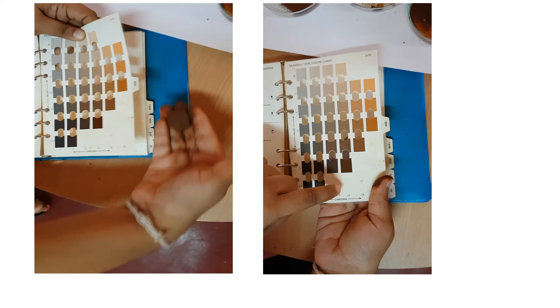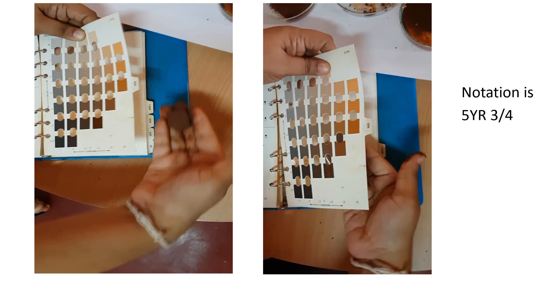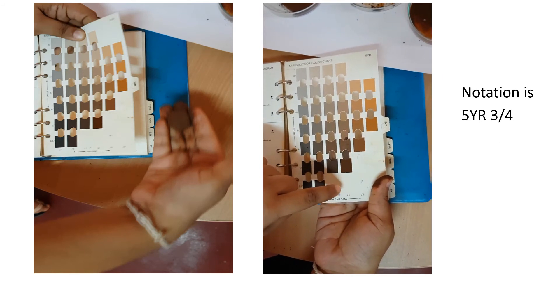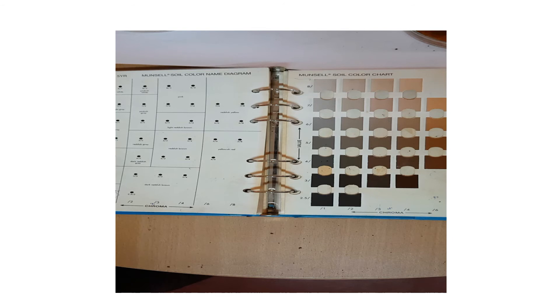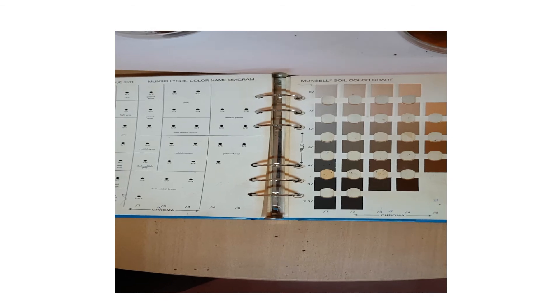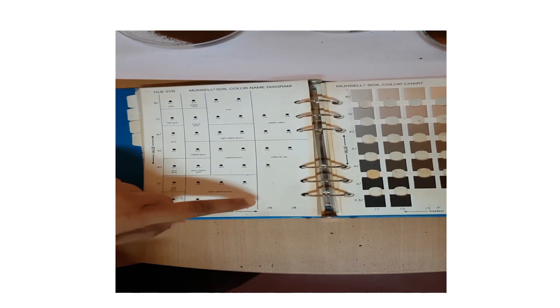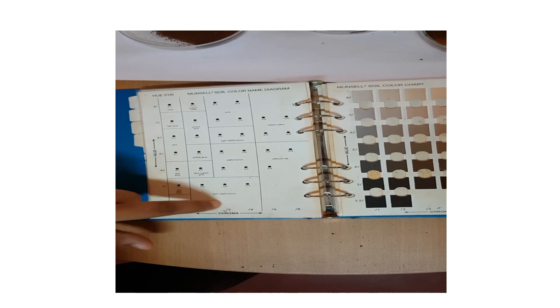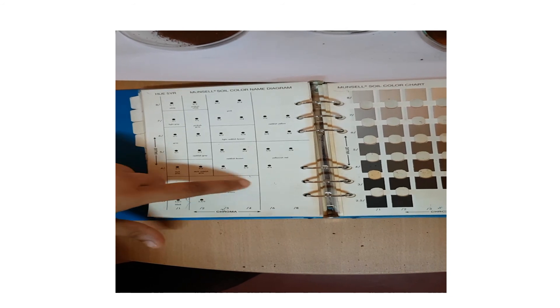So now we have decided that the notation could be 5YR 3/4. That means hue is 5YR, that is the color. And 3 is the darkness of the color, that is the value. And the 4 is the chroma, which is the intensity of the color. And then now we know the notation of the soil, and we need to know what is the color name. As we know the notation, we can select the value from left hand side and the chroma from the bottom. And then we can see the name of the soil. It is dark reddish brown.